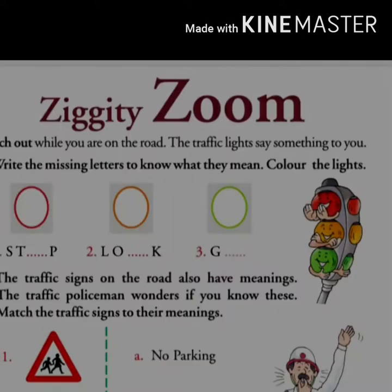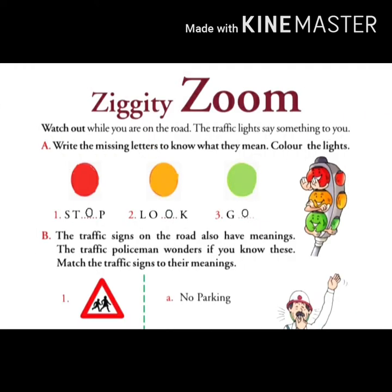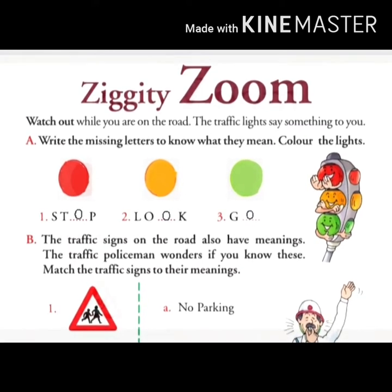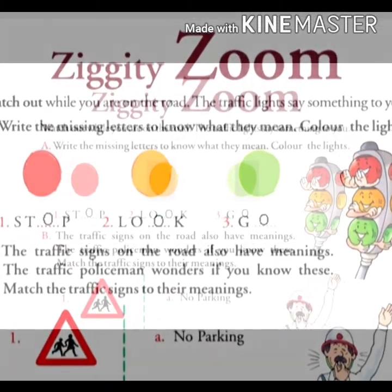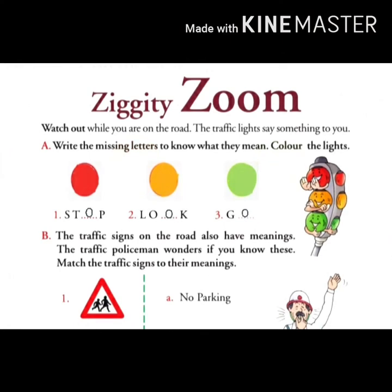In section A, we have to write the missing letters and color the lights. For number one, the boundary of the light is red, so we will color this light red. And since red light means stop — S, T, O, P — the missing letter is O.